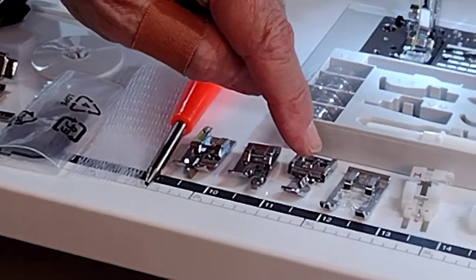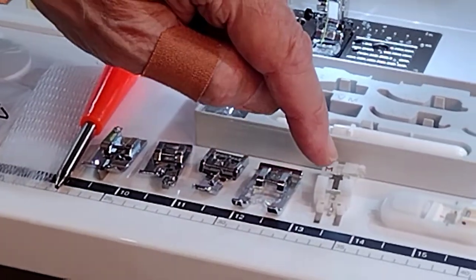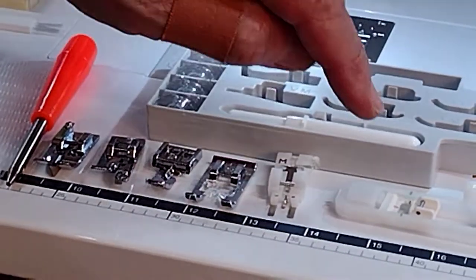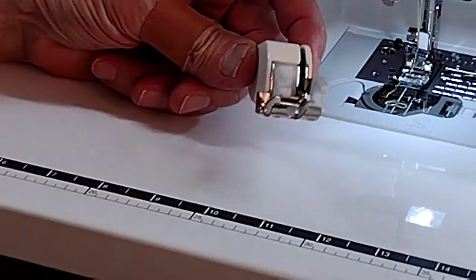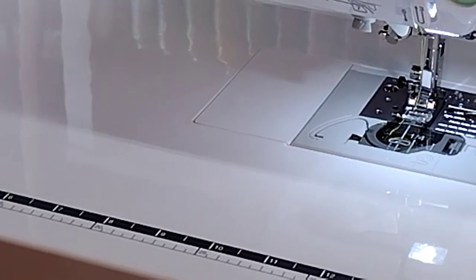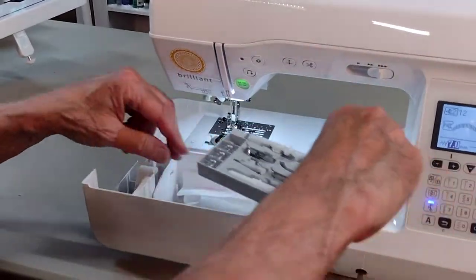Blind hem, overcast, snap-on zipper foot, satin stitch, button sewing foot, and a buttonhole foot, and a seam ripper. Wow! And we got a walking foot, and your accessories all store in this nice little compartment with extra parts down in there, including the walking foot.